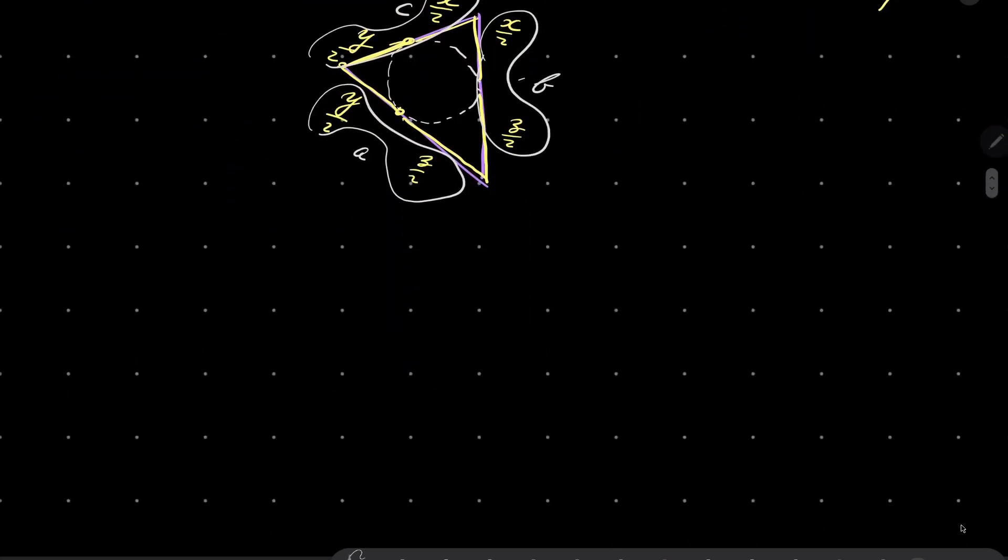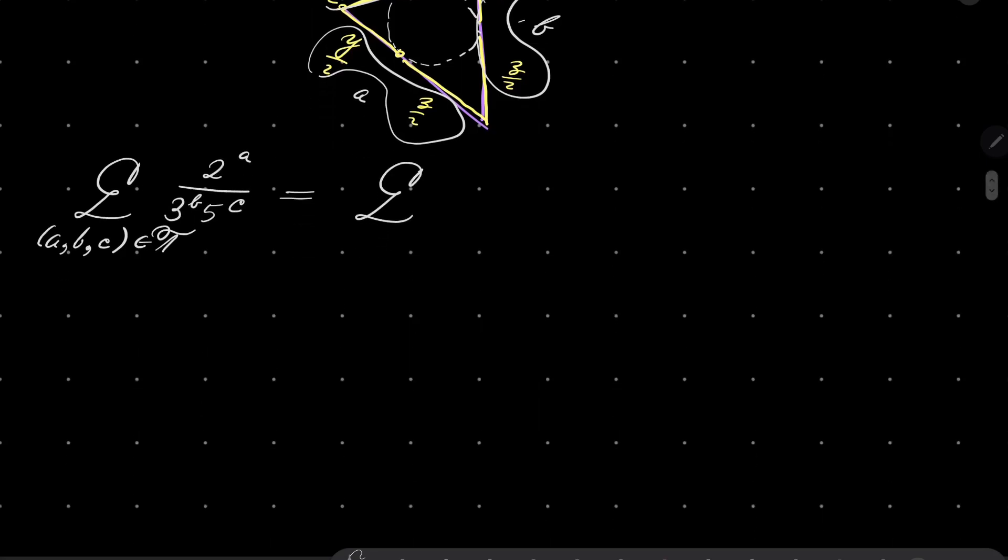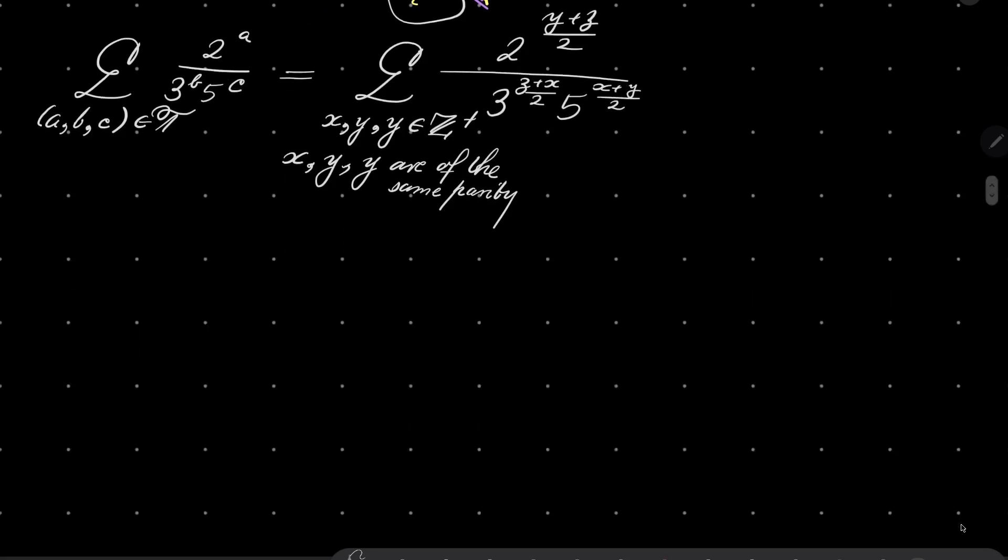Right. And now let's tackle our problem. Our sum over all triples (a,b,c) from set T of 2 to the power of a, 3 to the power of b, 5 to the power of c can be written as the sum going over all x, y, and z which are positive integers of the same parity. And now a becomes (y+z)/2, here we have 3 to the power of (z+x)/2, and here we have 5 to the power of (x+y)/2. Which is just perfect.